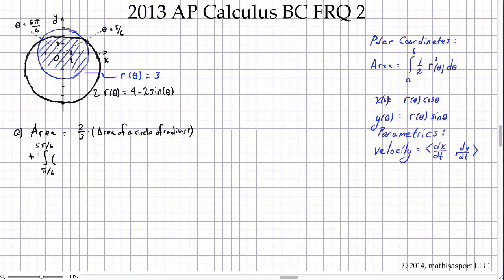We know that the formula for area is one half the radius squared d theta, and this radius is four minus two sine theta. That's a mouthful, but now that we've broken it down it's straightforward to calculate. The area of a circle of radius three—that's nine pi—two-thirds of that will be six pi, and this area we're going to have to evaluate numerically.